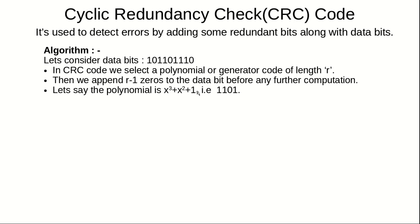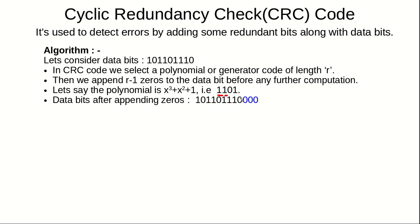Let's consider this polynomial. The question is how to interpret it. This polynomial is X cubed plus X squared plus one. X to the power zero means the zeroth bit from the right is one, the second bit is one, and the third bit is one. Since there is no X to the power one, the first bit is zero — giving us 1101.